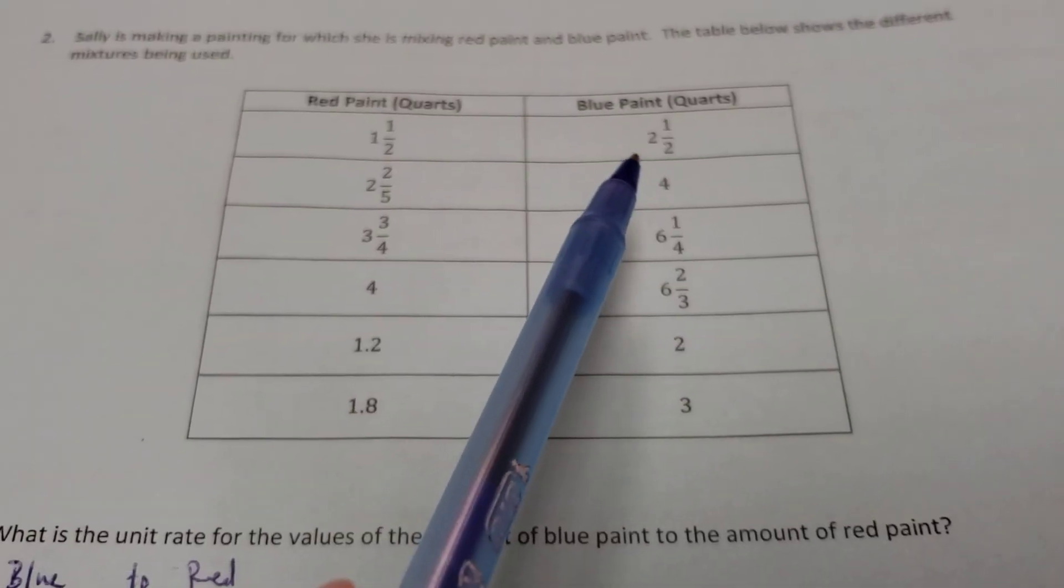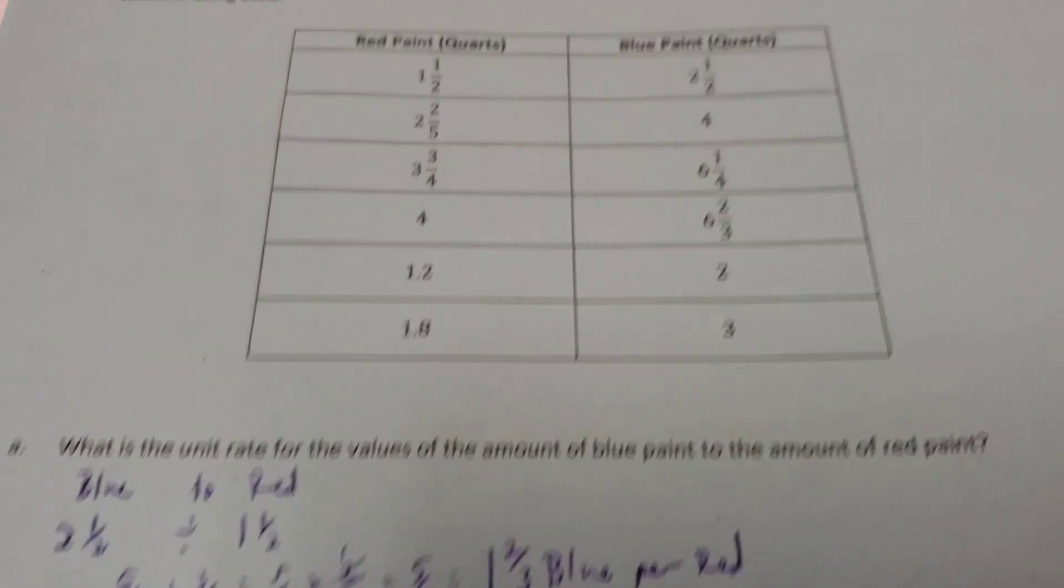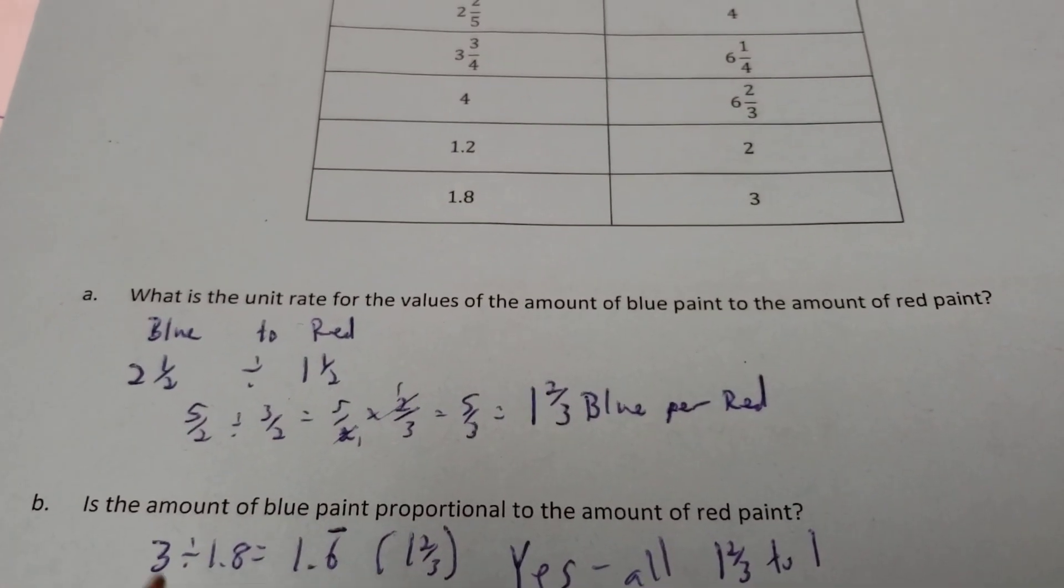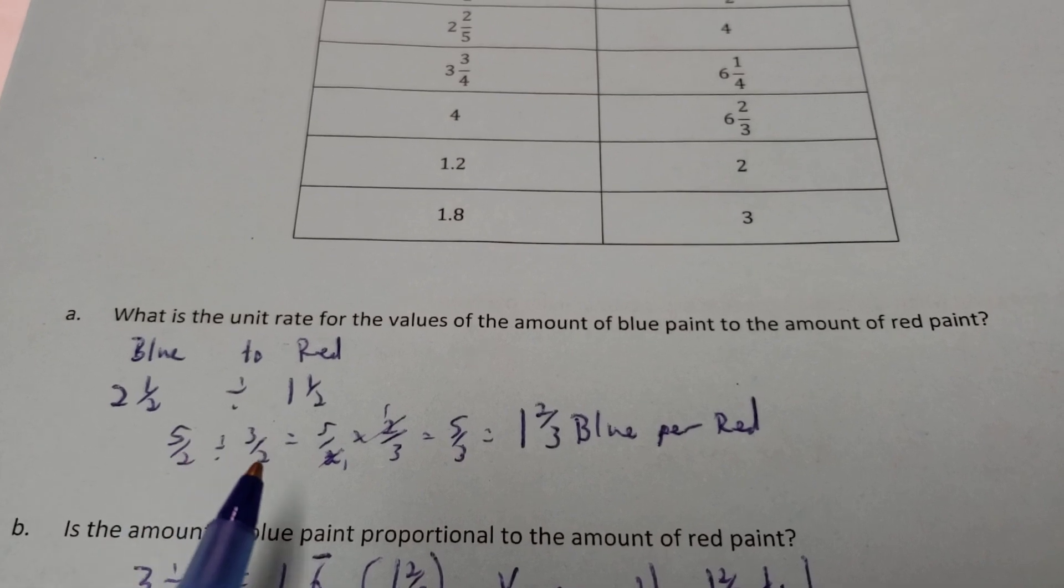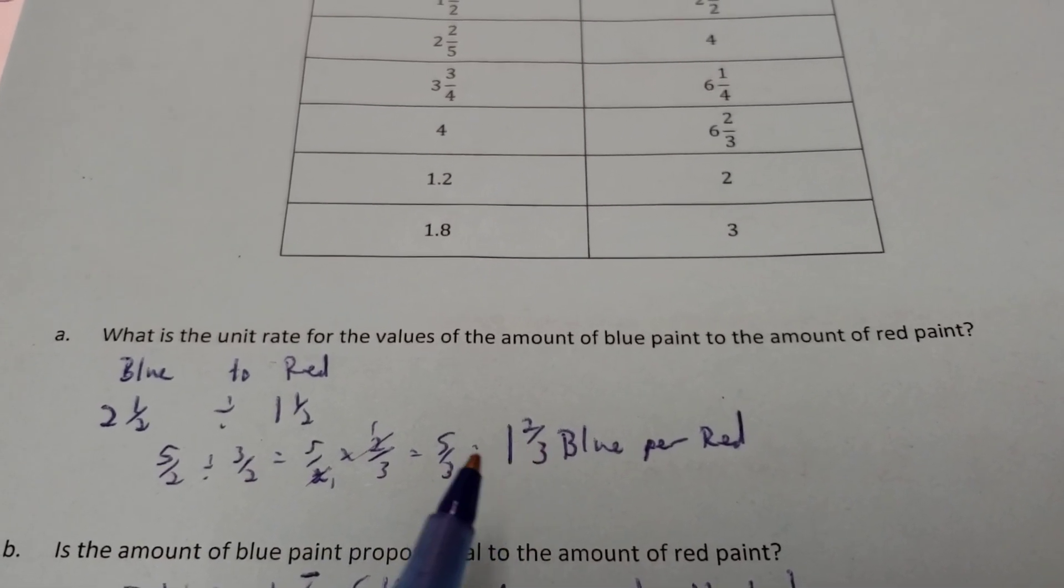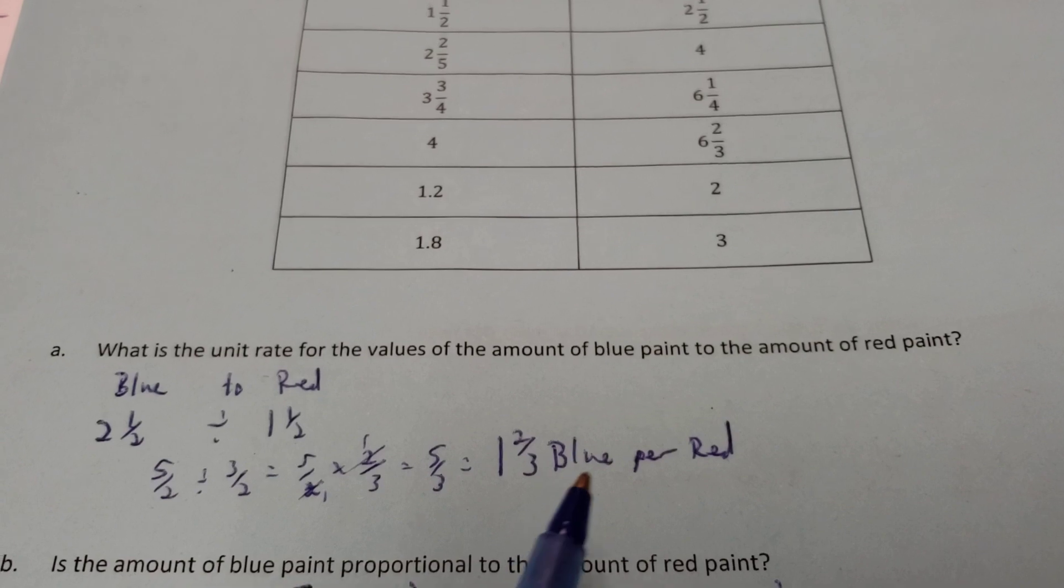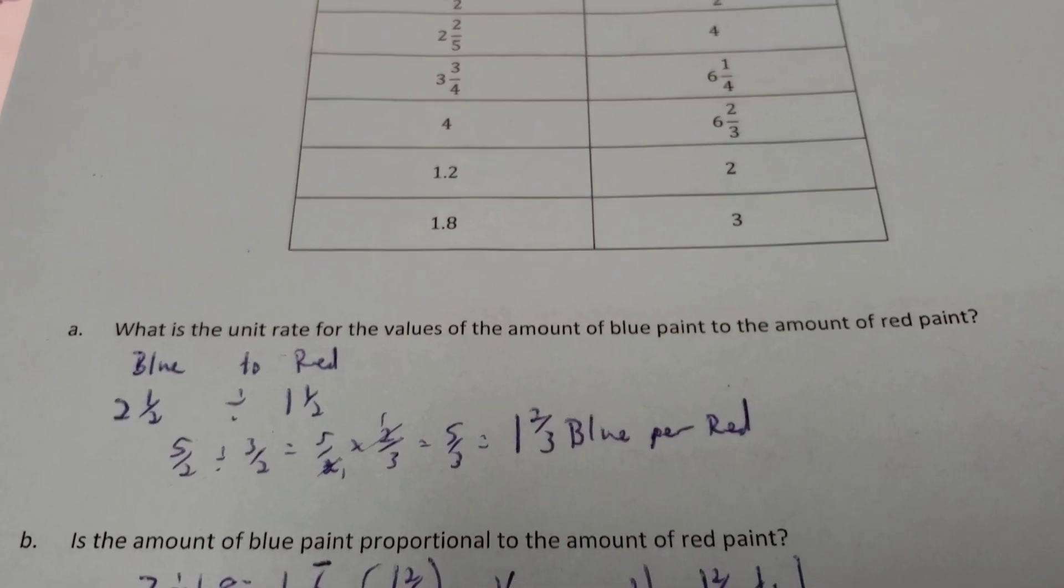Okay. So, I take blue, 2 and a half. I'm going to divide that by 1 and a half. Converting both to improper fractions. Now, I can keep, change, flip. And we get 1 and 2/3rds. So, there's 1 and 2/3rds blue for each red one.